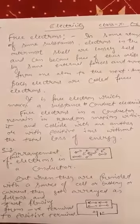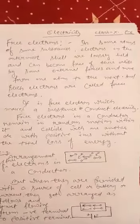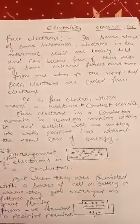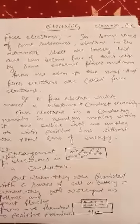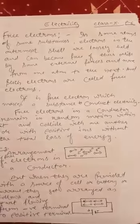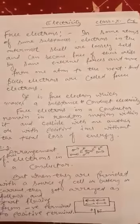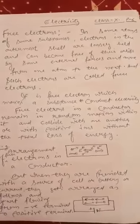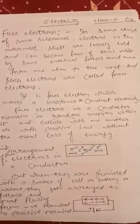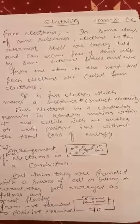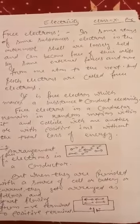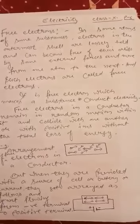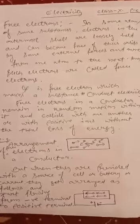Now I would like to talk about free electrons. What are free electrons? In some atoms of some substances, electrons in the outer shell are loosely held and can become free of their orbits by some external forces and move from one atom to the next. Such electrons are called free electrons.